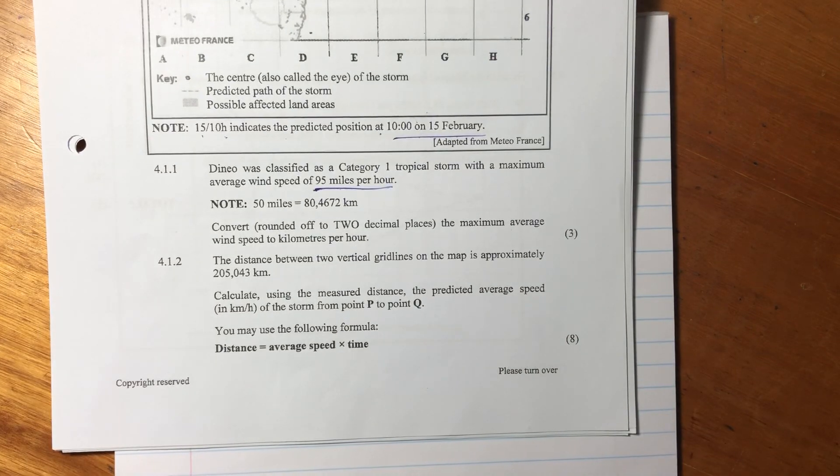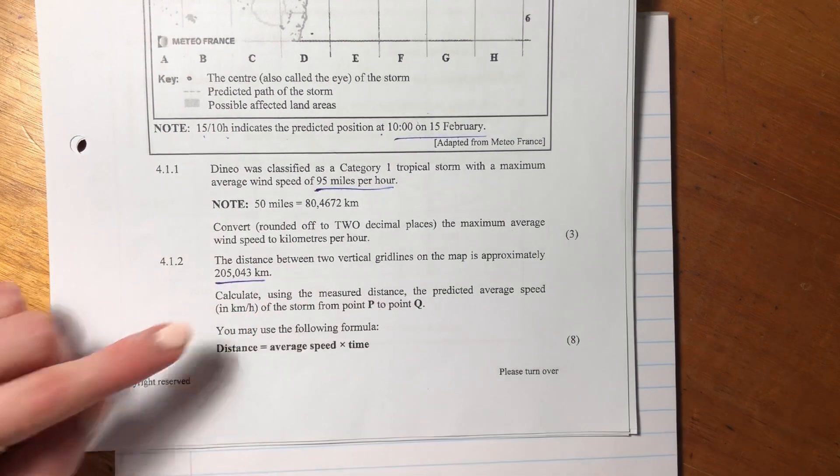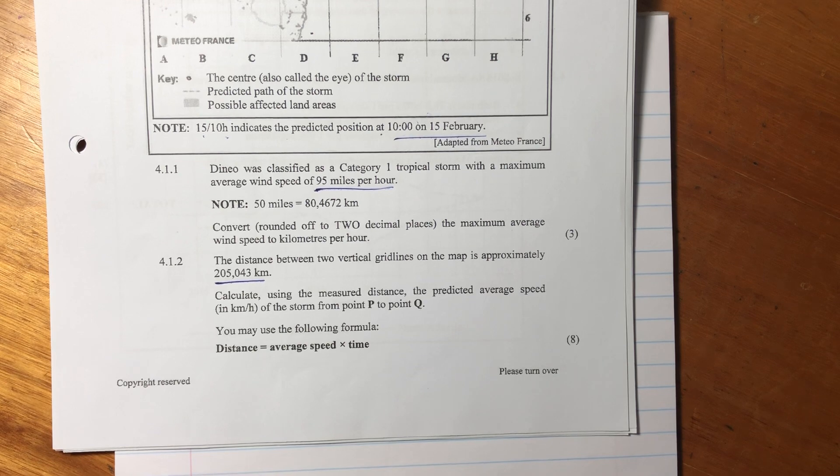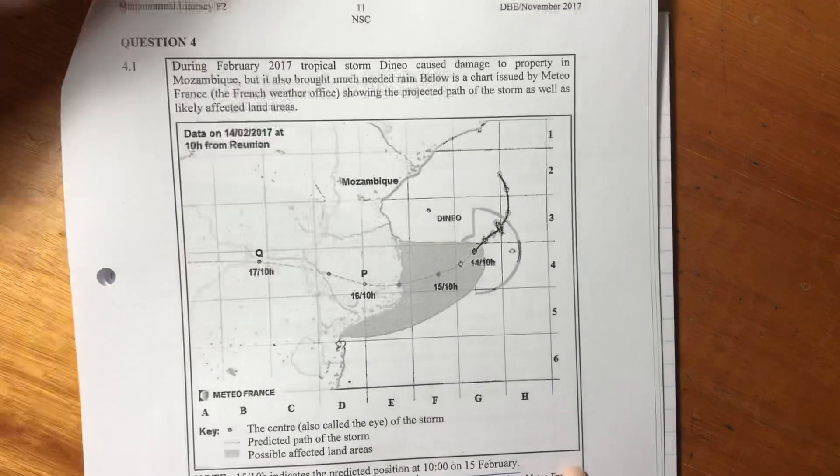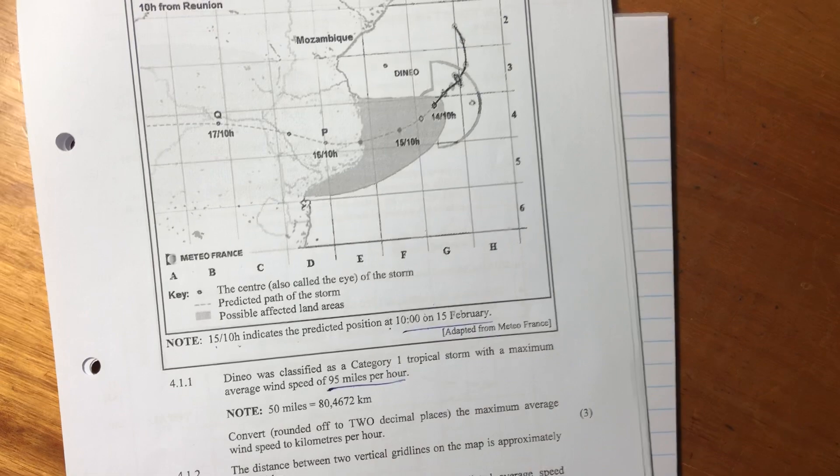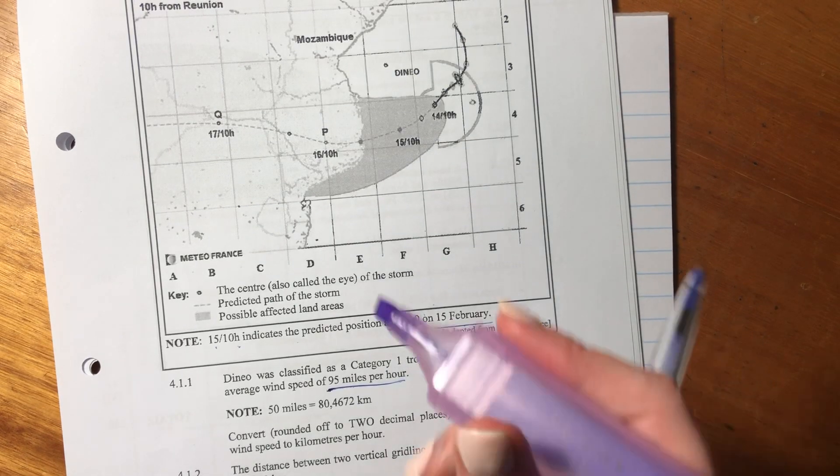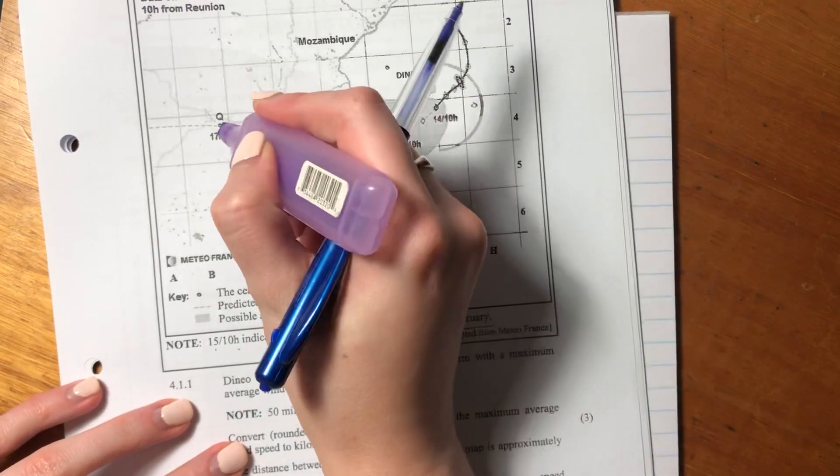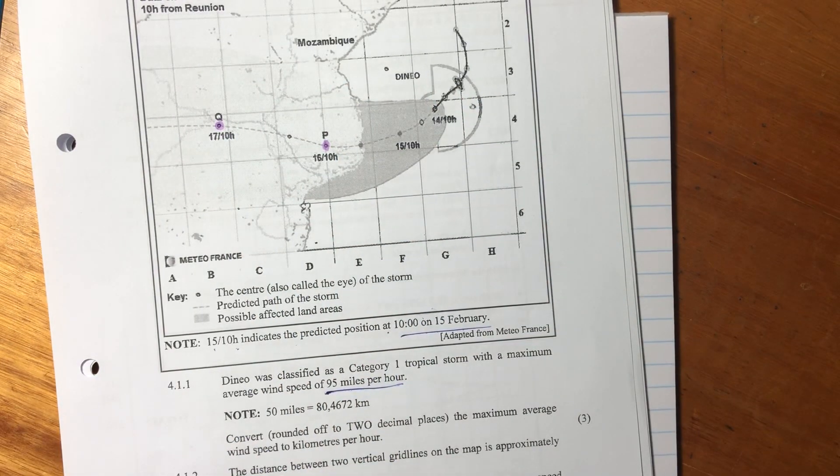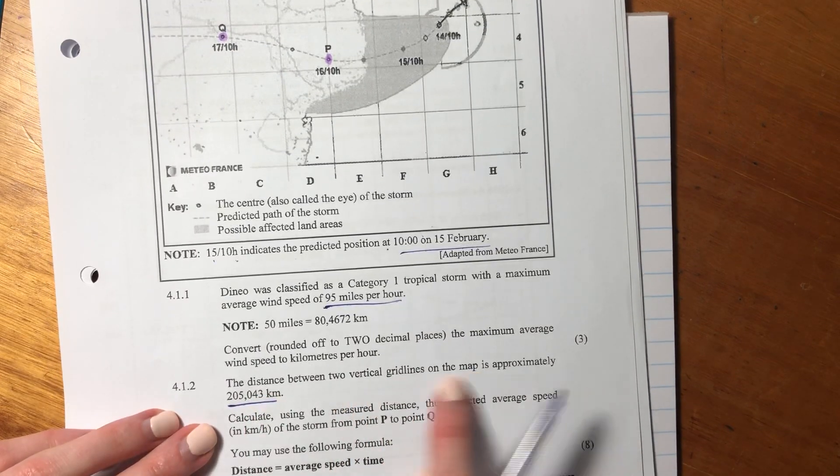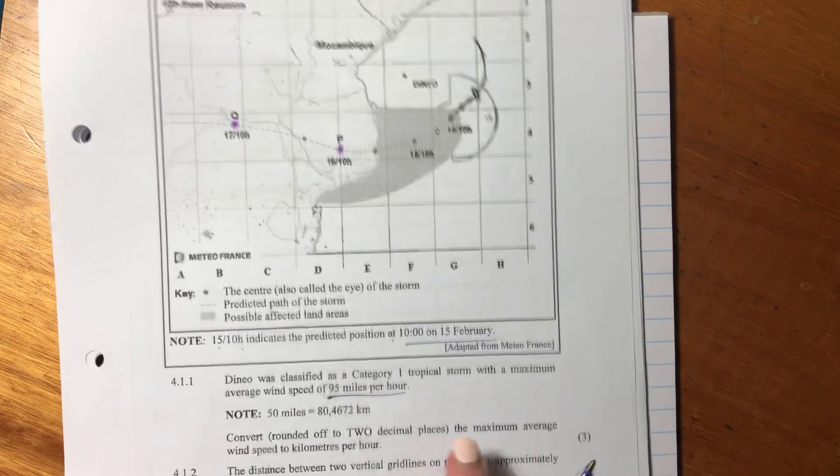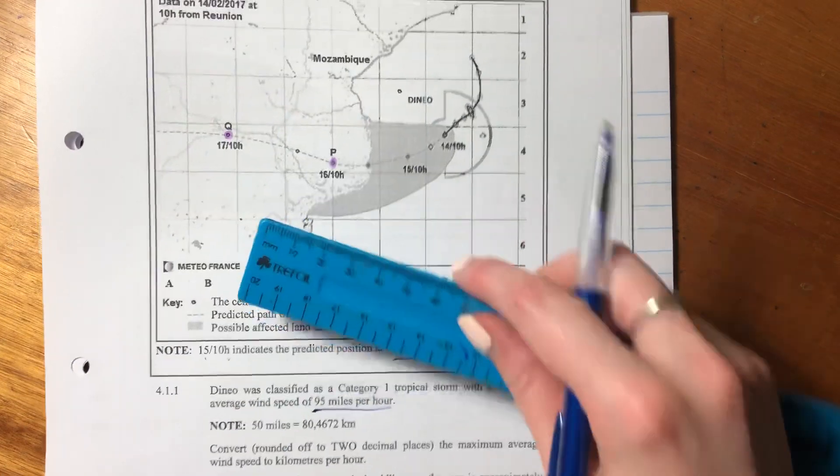Then 4.1.2 says, the distance between two vertical grid lines on the map is approximately this many kilometers. Then it says, calculate using the measured distance, the predicted average speed of the storm from point P to point Q. Use the following formula. So we're going to need our highlighter, and we're going to need a ruler.